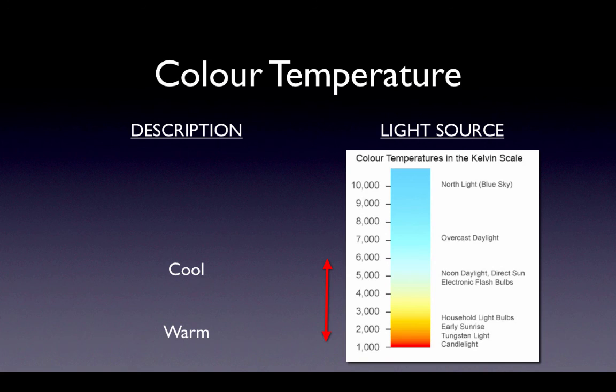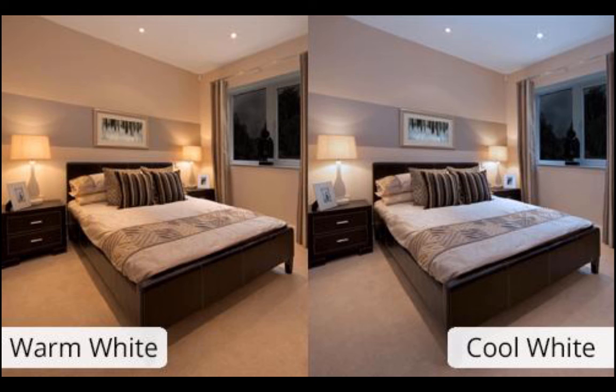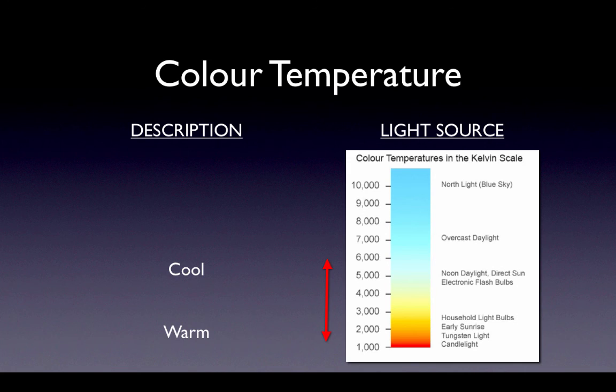We also describe light color temperature by the way it makes us feel psychologically. Even though blue light has a higher color temperature, we describe it as cool because of how it makes us feel. Blue is the color of snow and ice and cold water taps, so we say blue light is cool. Red is the color of fire and the sun and hot water taps, so we call reddish light warm. Remember, it's the way it makes us feel, not the size of the number. Blue is cool but has a higher color temperature.